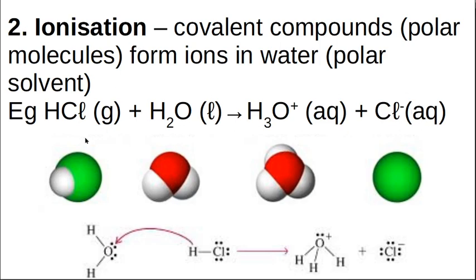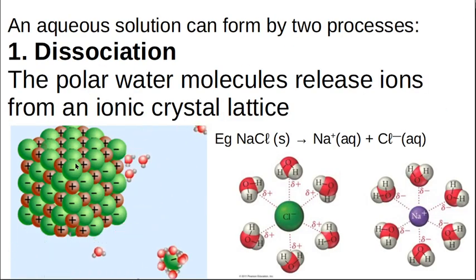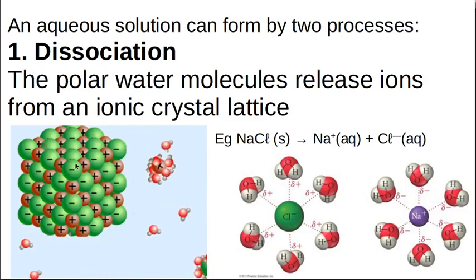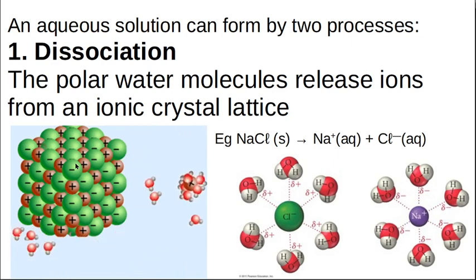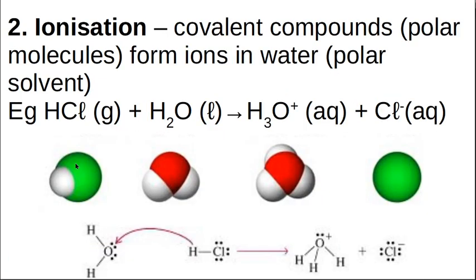So the main thing that does this is acids, and you'll know something is an acid because there is an H at the front of its chemical formula. So water can sometimes be considered an acid as well, but most acids have an H at the front of their chemical formula. So this is ionization as opposed to dissociation. So these are the two processes where you can form an aqueous solution, dissociation or ionization.